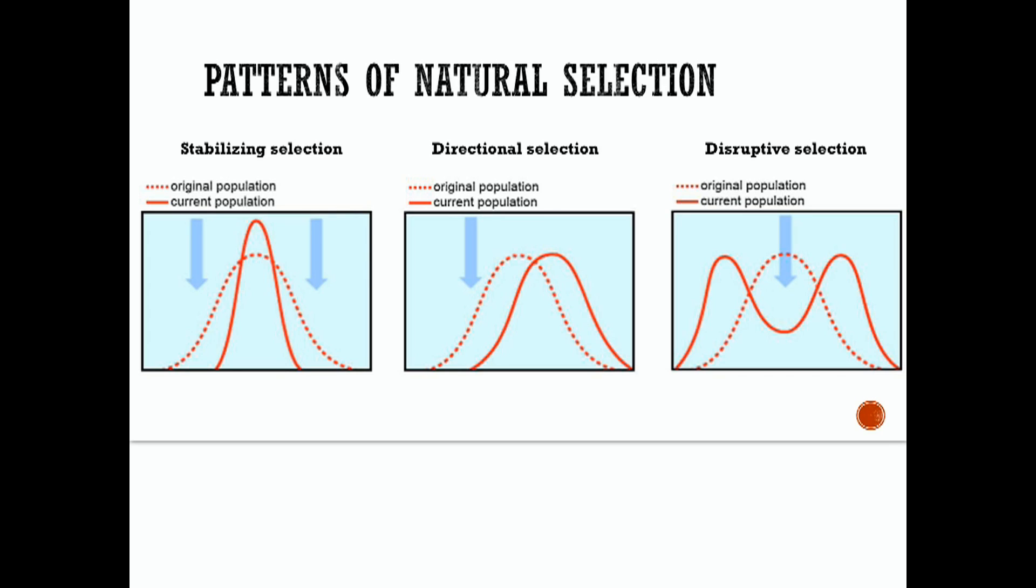Directional selection occurs when a particular phenotype on the extreme end of the distribution is highly favored. Here's your original population and it moves to one of the extreme ends is highly favored. This causes the distribution to shift over successive generations so that the extreme phenotype becomes more common. This type of selection is often associated with environmental changes, like stronger beaks in a population of birds could be selected over weaker varieties if seeds develop thicker coatings over time and they need that stronger beak. If the beak size went from weaker to medium to strong and the seeds became very thick, those birds needed that thicker or stronger beak. That's directional selection.